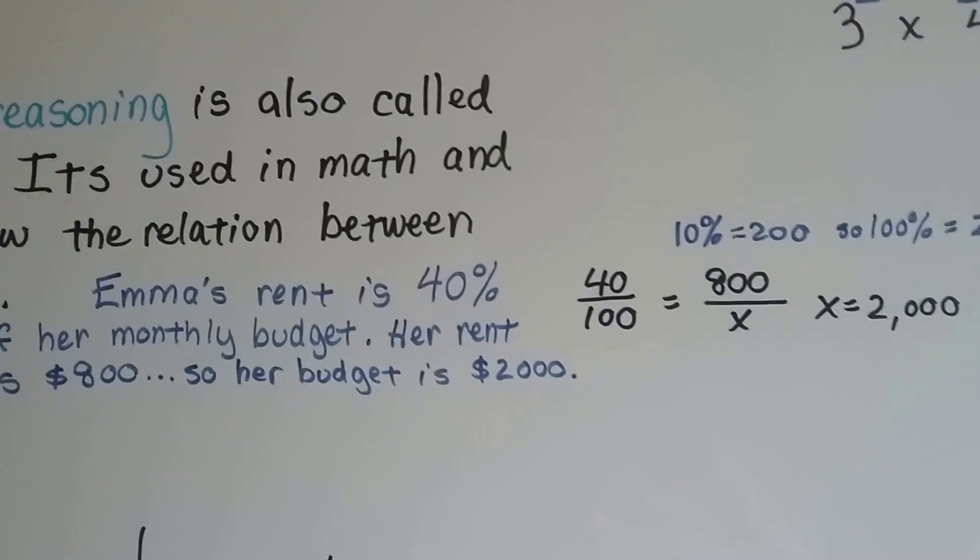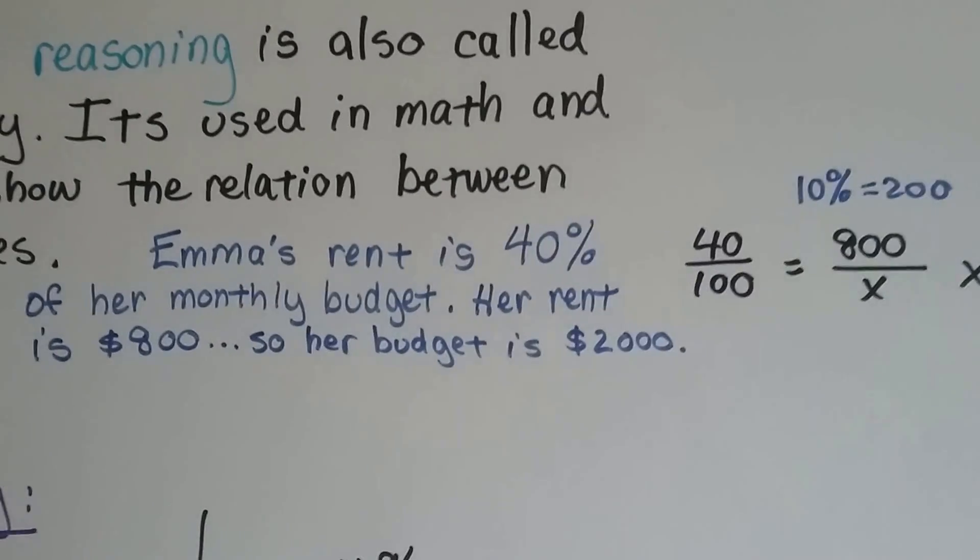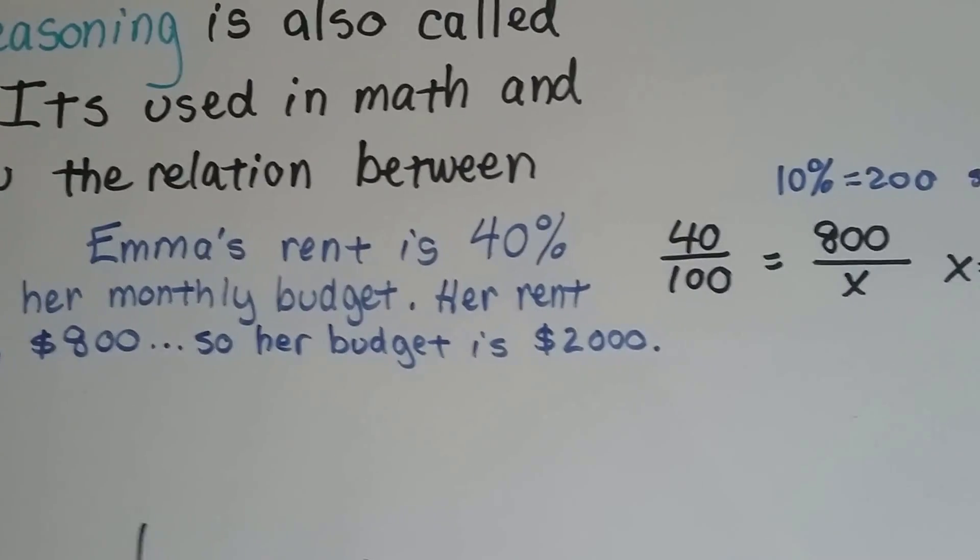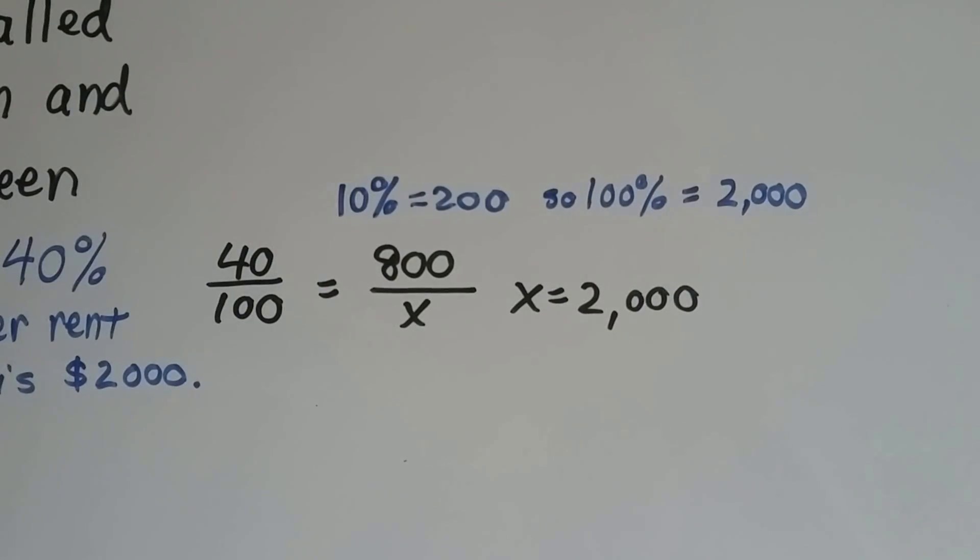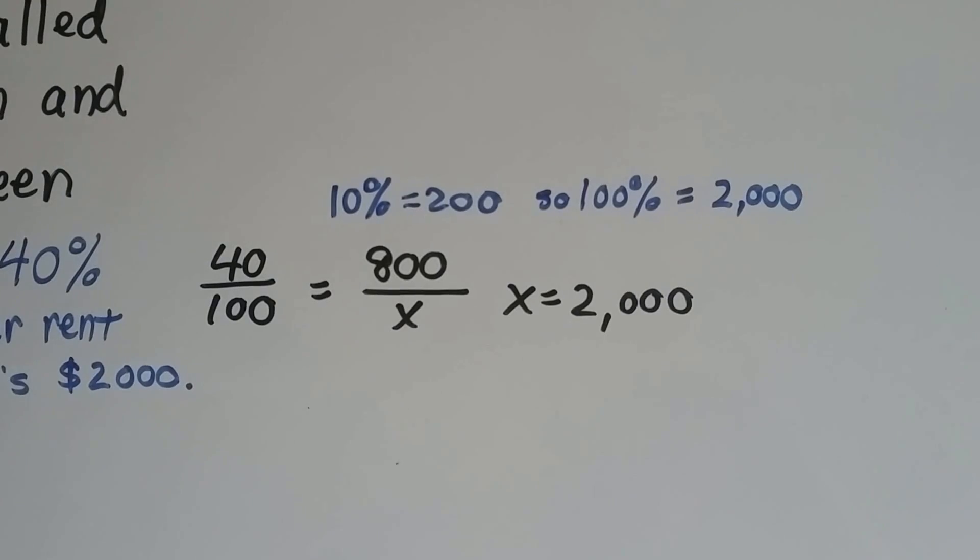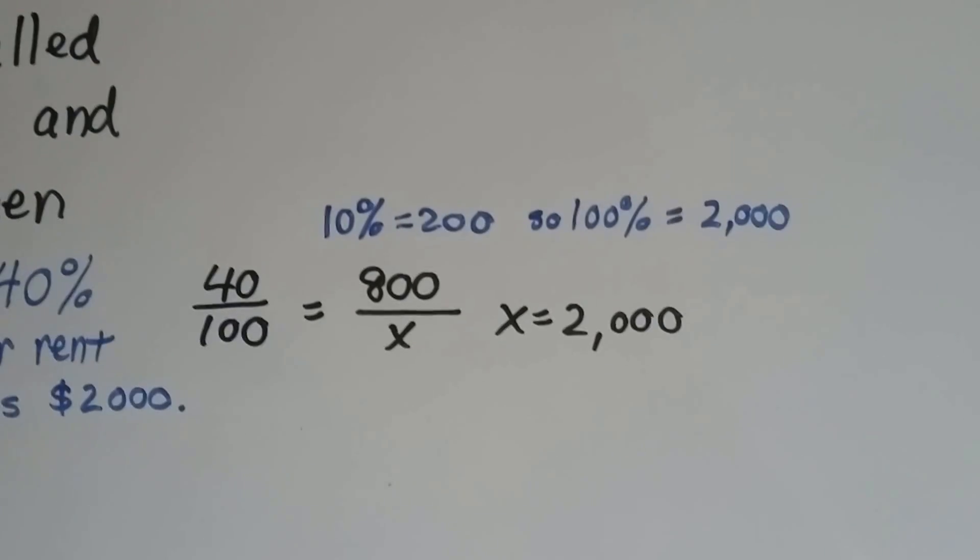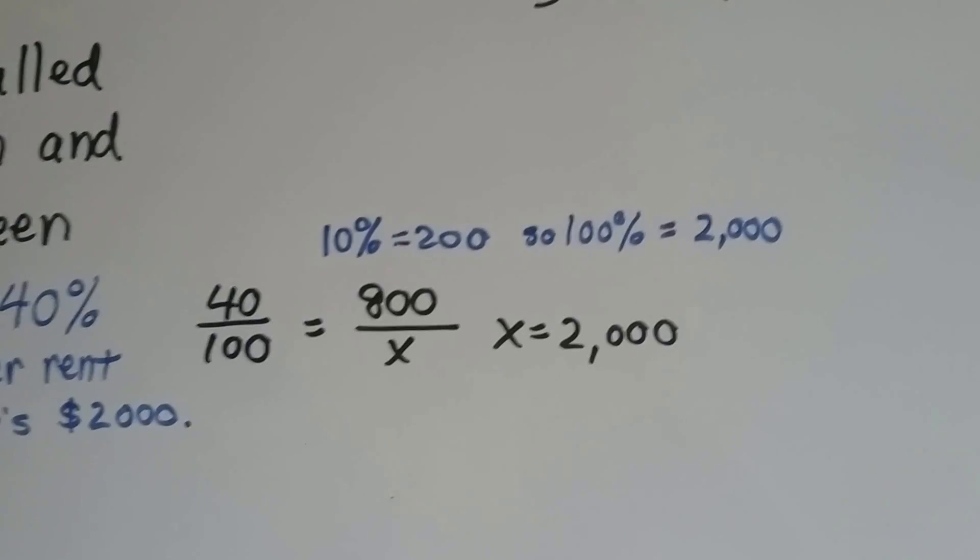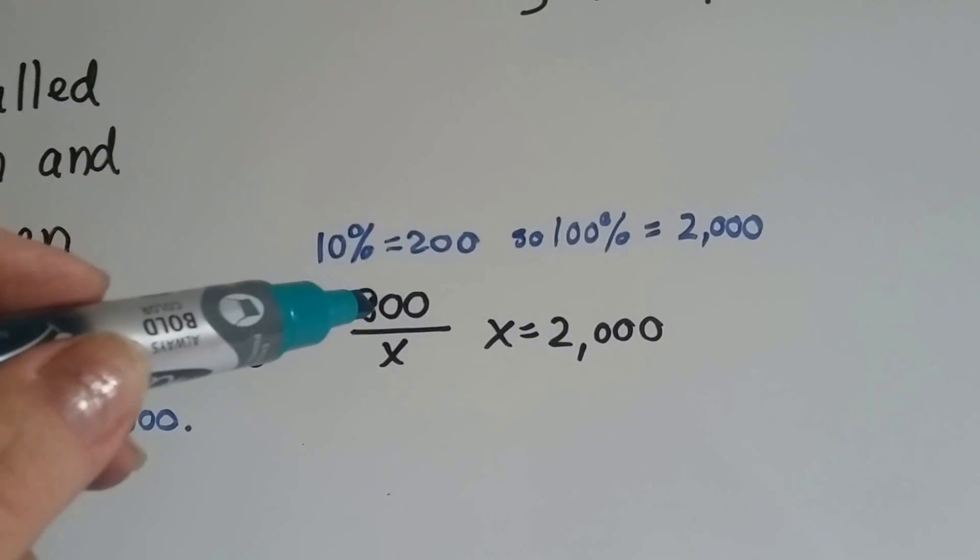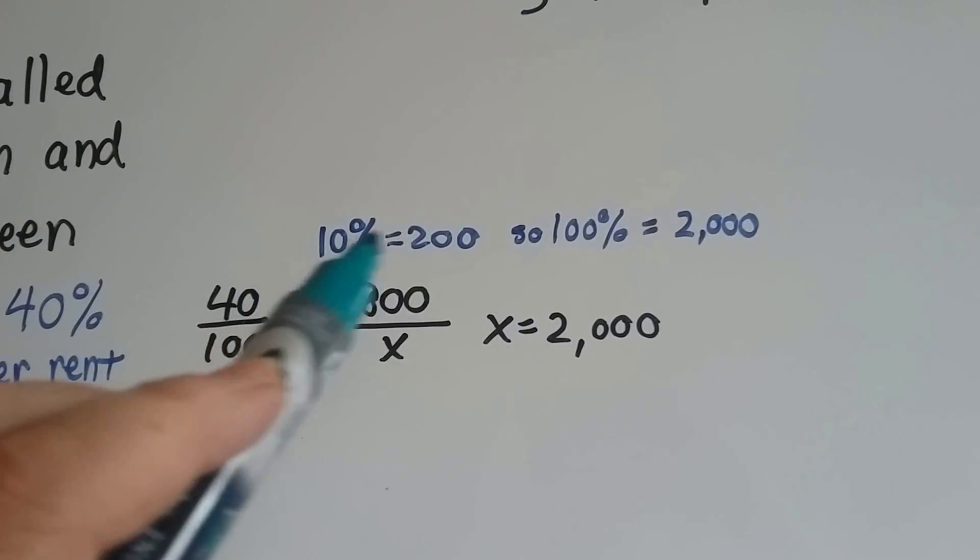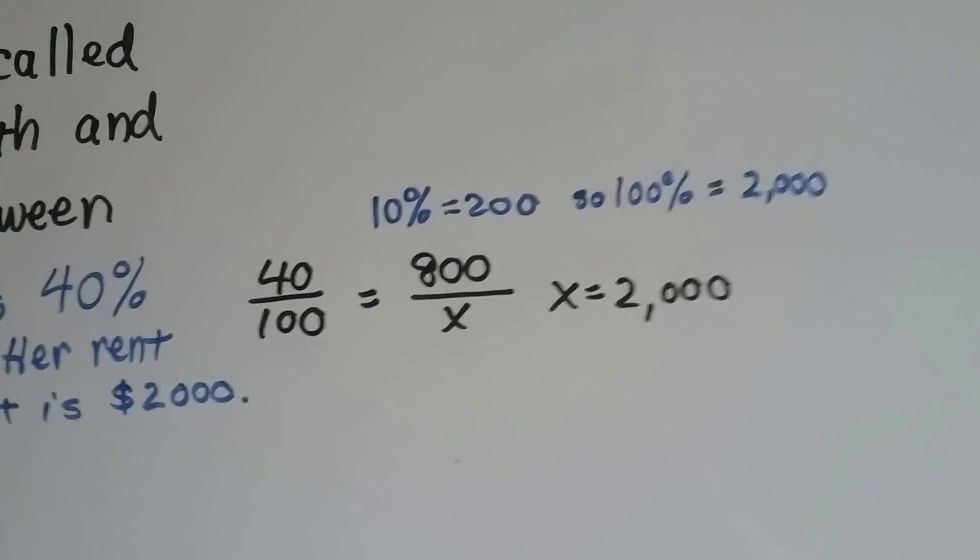We did this in the other video. Emma's rent is 40% of her monthly budget, so if her rent is $800, her budget is $2,000. This is why: If 40 over 100 is equal to 800, then all we have to do is figure out what is 10%. We divided this by 4 to get 10%, so we can divide this by 4 to get 200. Now we know that 10% is 200, so 100% must be 2,000. That's proportional reasoning.